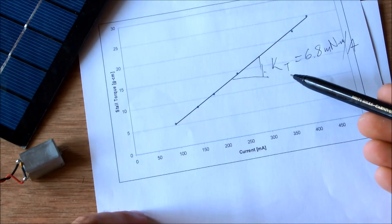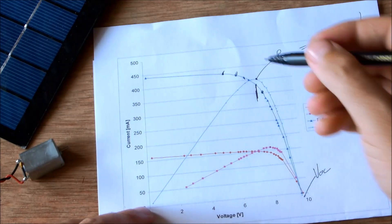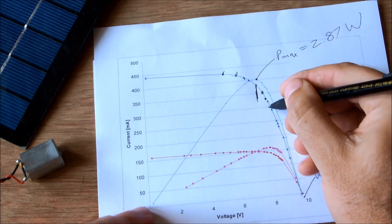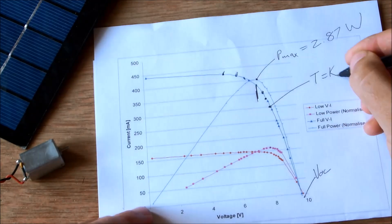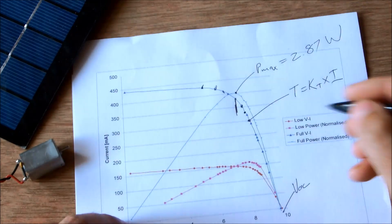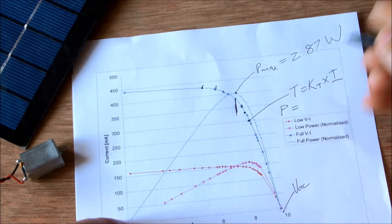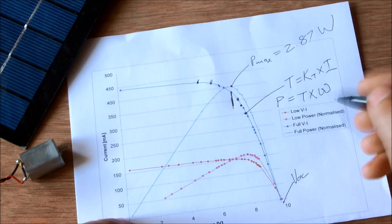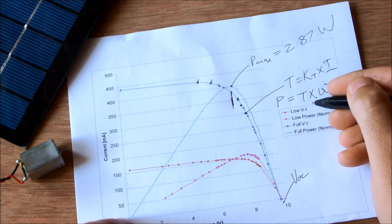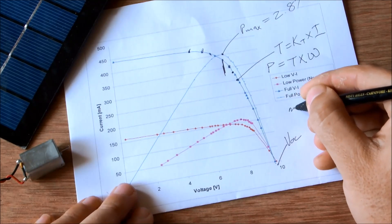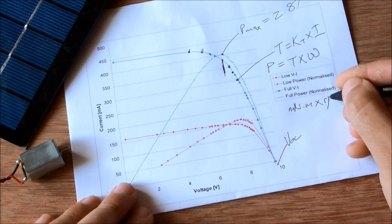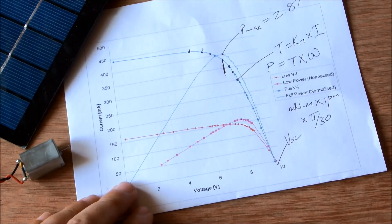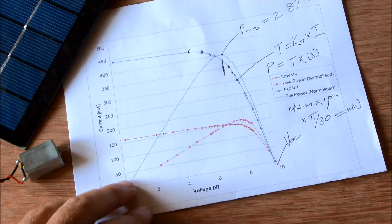Now knowing this torque constant I can calculate the torque at any point, as long as I know what the current was. Because that constant is constant regardless of voltage. So at a particular point I can work out the torque, which is simply the torque constant multiplied by the current. Once I know the torque I can work out the power because I have the rotational velocity. And it is simply torque multiplied by rotational velocity. If you want to calculate that directly from the values as measured, that would be millinewton meter multiplied by rpm multiplied by pi over 30, and that will give you a power output in milliwatt.